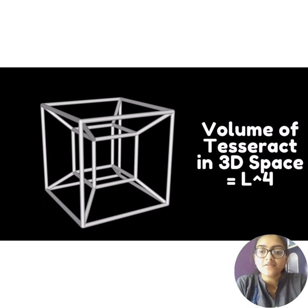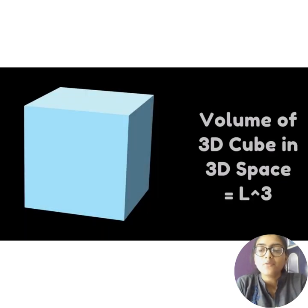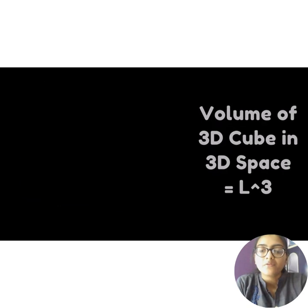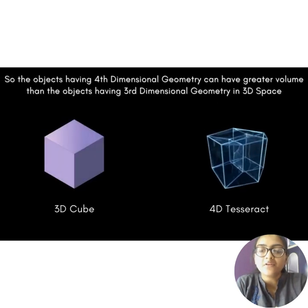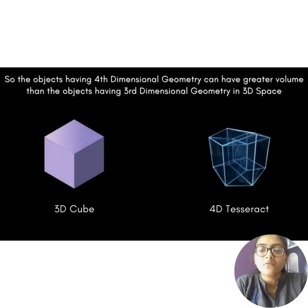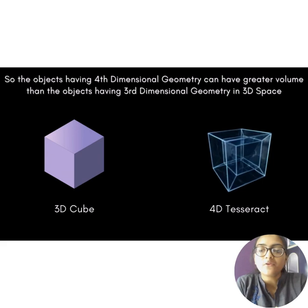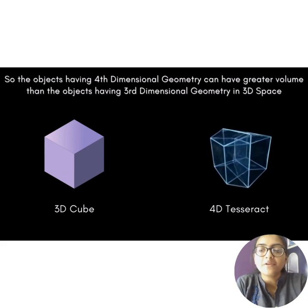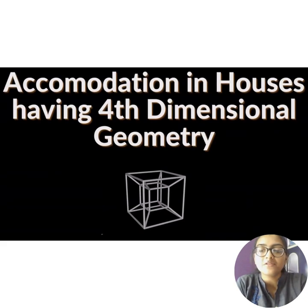The volume of a tesseract in 3D space is L⁴, where L is the length, whereas the volume of a cube in 3D space is L³, where L is the length of the cube — which is obviously less than that of a tesseract. So the volume of objects following 4D geometry can be greater than objects following 3D geometry, as we saw in the case of both the sphere and the tesseract.